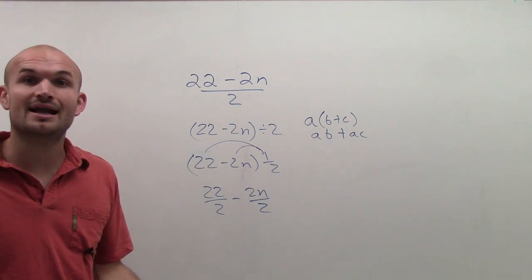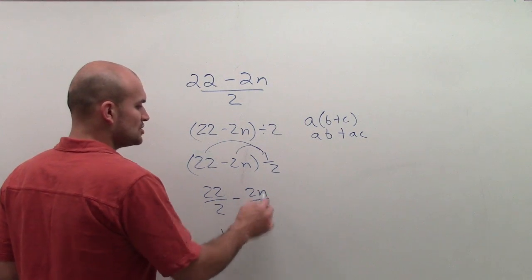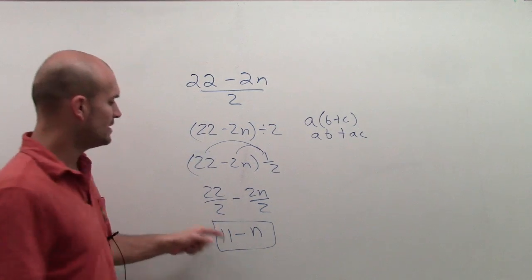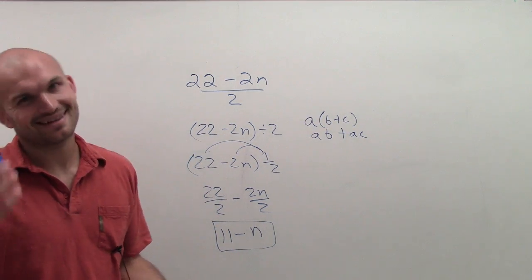Then I can see, can I simplify this? And yeah, you actually can. 22 divided by 2 is 11 minus 2n divided by 2 is n. So actually, this can be rewritten in the simplest form of 11 minus n. Isn't that cool? I knew it would.